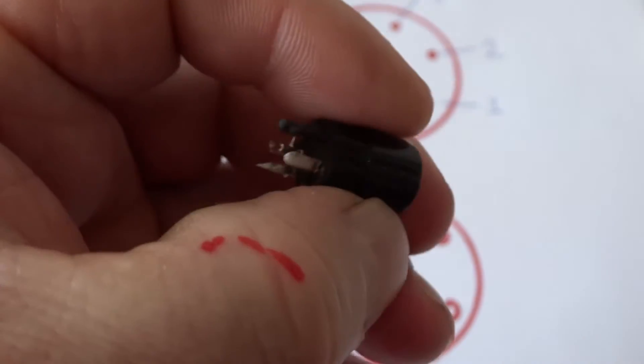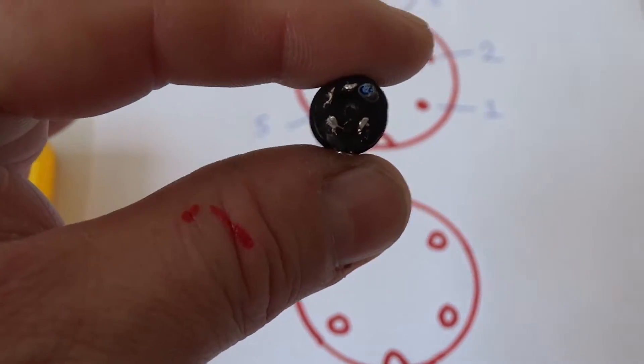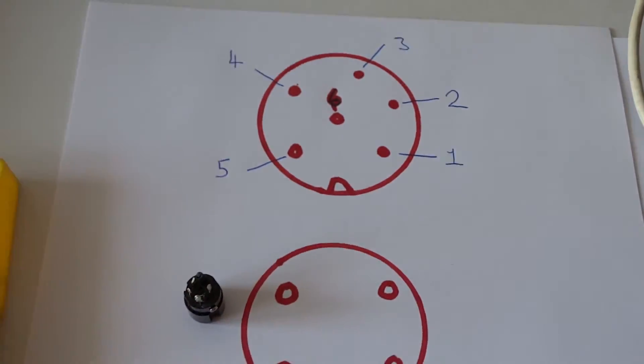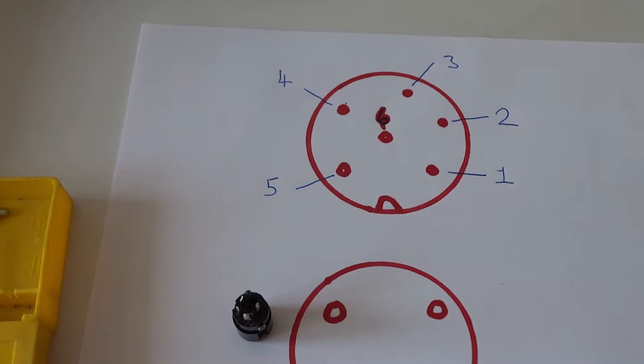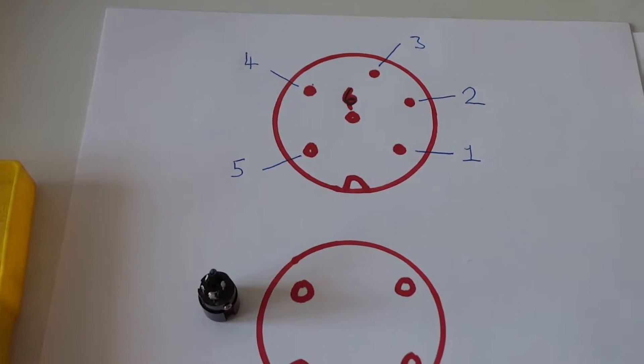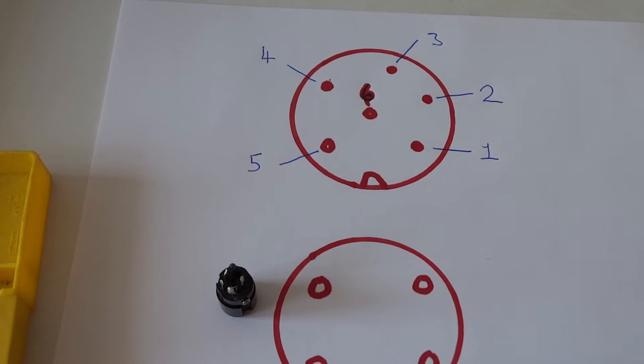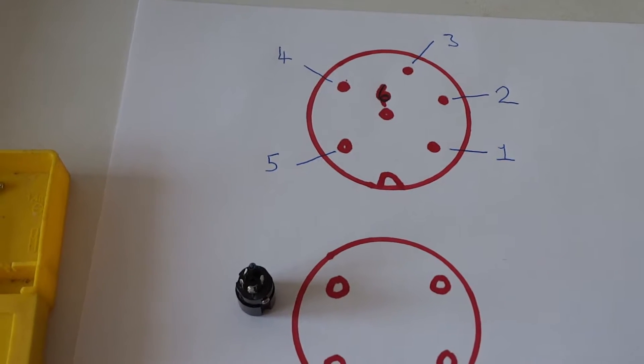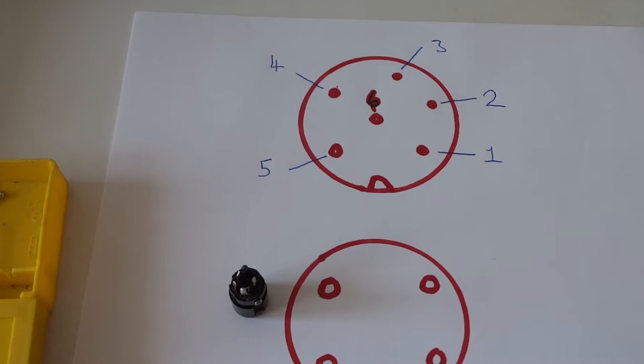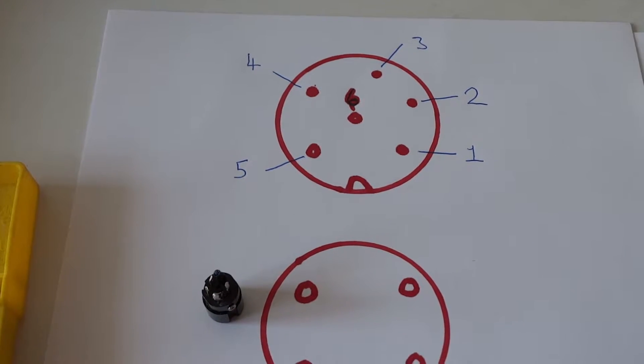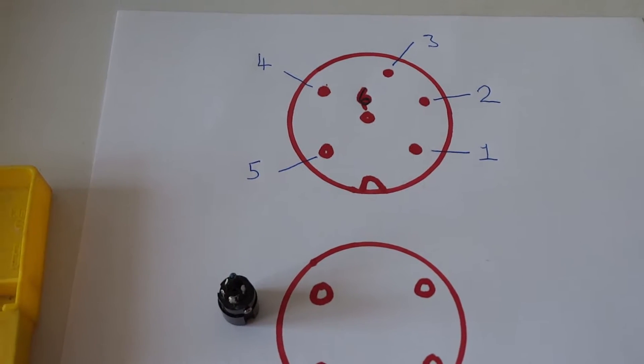So pin six is not going to be used at all. On my rig I checked it today, it's about eight volts out of that one. You want to avoid that like the plague because you can blow your rig up.